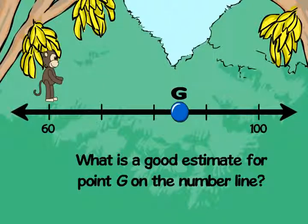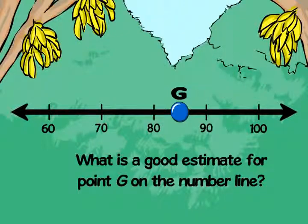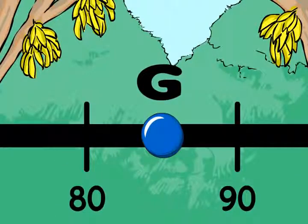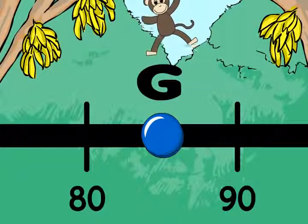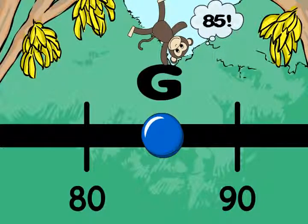Step three. Skip count by 10 from 60 to label the marks. 70, 80, 90. And here's the extra step. Estimate the position of point G. You can see that point G is about halfway between 80 and 90. That's about 85. So 85 is a good estimate for point G.